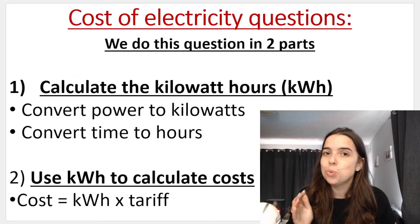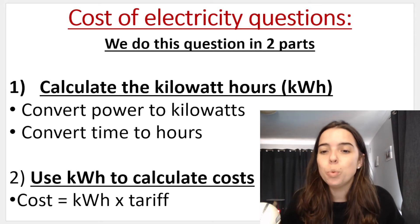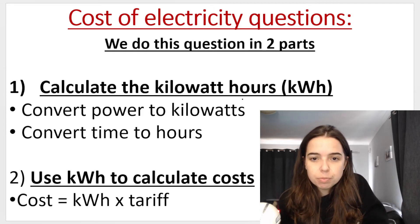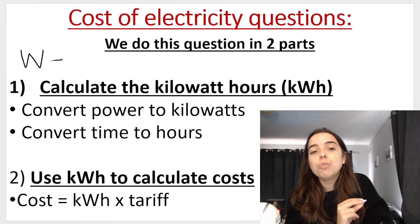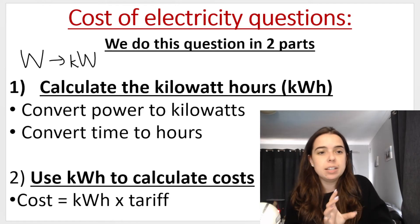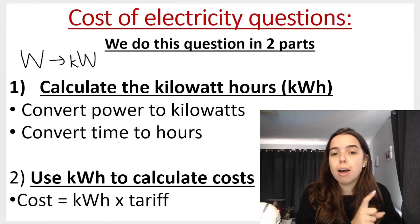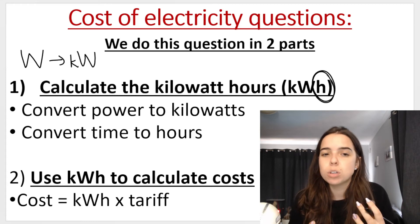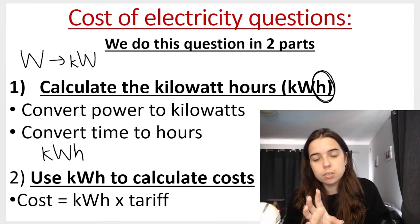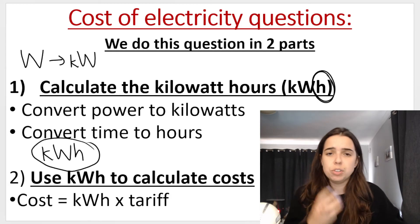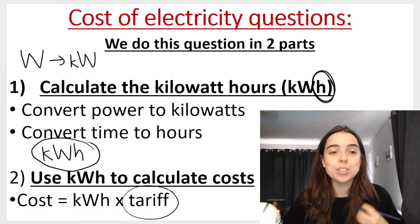And these are the steps that will follow to work out the cost of electricity. So I said here we do the question in two parts. First, because we're working with kilowatt hours, we need to work out the kilowatts. Remember, kilowatts is power. So you need to work out the power. If you have your power in watts you need to convert it to kilowatts. Basically use your table over here to convert watts to kilowatts, you divide by a thousand. Then you convert your time to hours. That will give you your kilowatt hours. Then all you do is you multiply your kilowatt hours by your tariff.